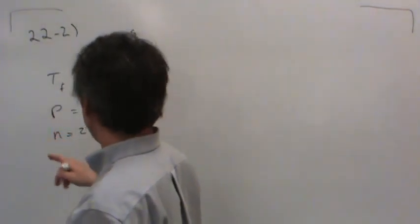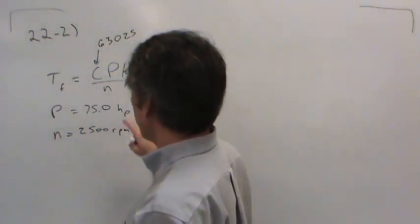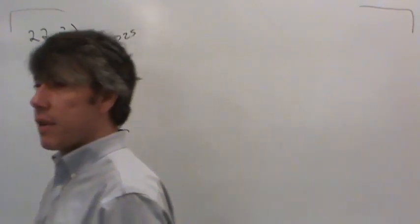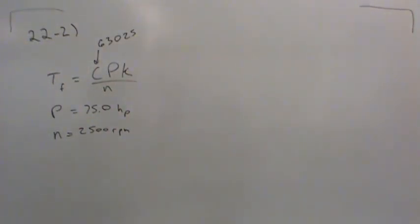So anyway, in our particular case, the speed is in RPM, the power is in horsepower, and they have not specified the units for the torque. Now, a lot of times, larger clutches are specified in foot pounds. So instead of giving the result in inch pounds, I'm going to calculate the torque in foot pounds.